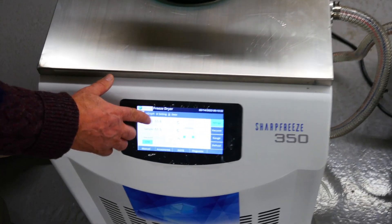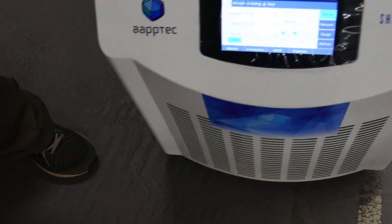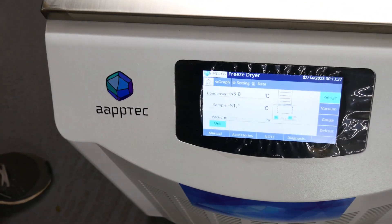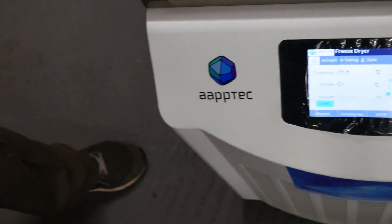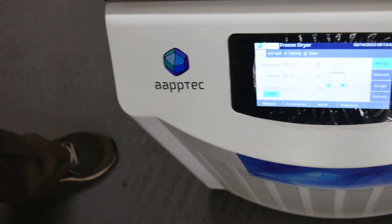Right now, inside the chamber is a minus 55.8 degrees, so it is a much lower temperature than dry ice and acetone. Dry ice and acetone only produce minus 30 degrees, so the samples freeze very quickly.